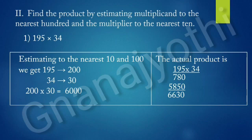But, the actual product is 195 into 34 is 6,630.